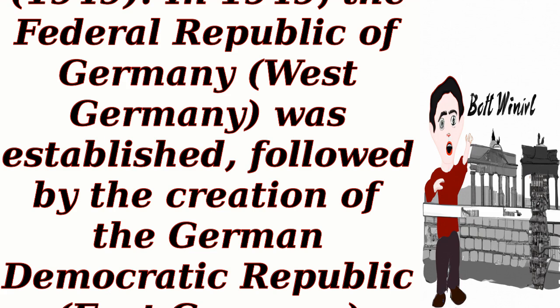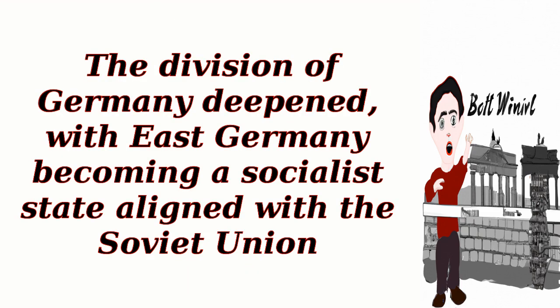Formation of East and West Germany, 1949: In 1949, the Federal Republic of Germany — West Germany — was established, followed by the creation of the German Democratic Republic, East Germany, under Soviet influence. The division of Germany deepened, with East Germany becoming a socialist state aligned with the Soviet Union.